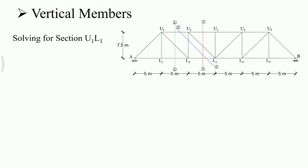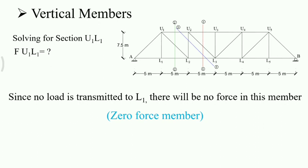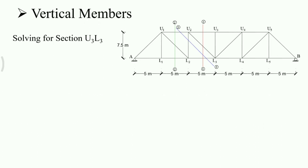The next member is vertical member U1L1. Since no load is transmitted to L1, there will be no force in this member — it is a zero-force member. Therefore the force in members L1L2 and AL1 will be the same. Similarly, for the U3L3 member, since no load is transmitted to U3, the member U3L3 is also a zero-force member.